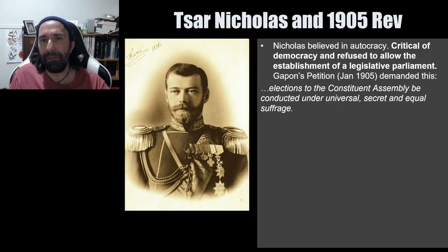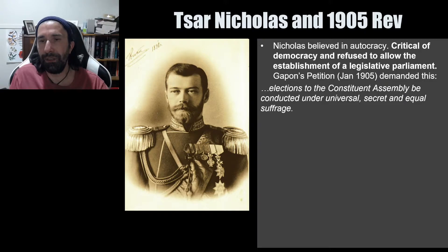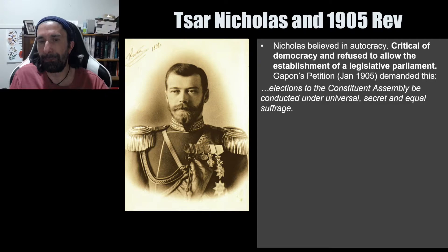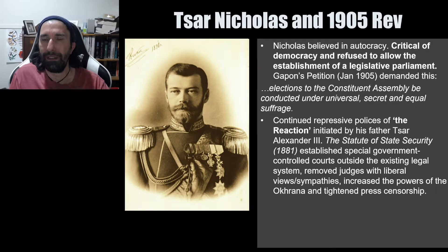The demand for a legislative parliament was a common one amongst the revolutionary groups in the 1905 revolution. Father Gapon, for example, referred to it in his petition where he wrote that elections to the constituent assembly be conducted under universal, secret, and equal suffrage. So he demanded the creation of a constituent assembly — a legislative parliament. The Duma, which was eventually created, is just another Russian word for parliament.